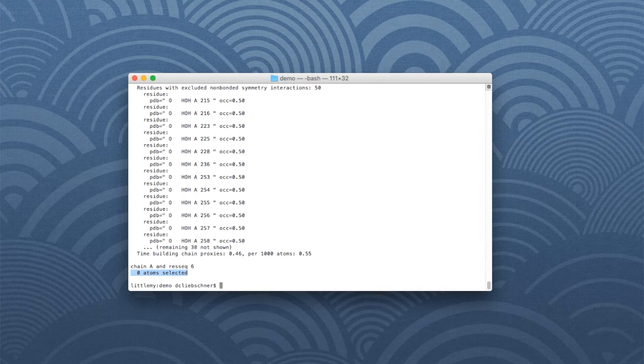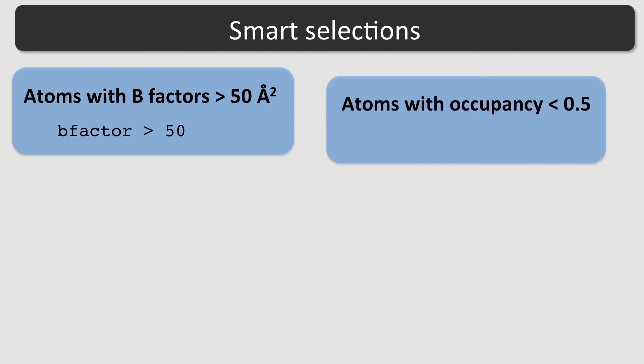This command line tool can therefore be used to quickly check a selection. It is also possible to select atoms based on their numerical properties. Here are some examples. To select all atoms with b-factors larger than 50, use b-factor greater than 50. To select all atoms with occupancy smaller than 0.5, use occupancy smaller than 0.5. There are also smart selections, but note that they may not be recognized by all programs.